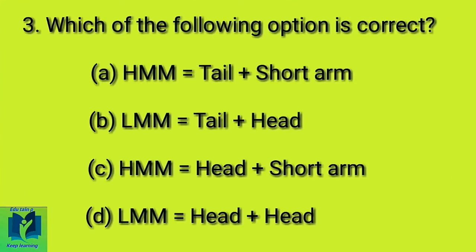Which of the following option is correct? Option A: Heavy Myosin is equal to Tail plus Short Arm. Option B: Light Myosin is equal to Tail plus Head. Option C: Heavy Myosin is equal to Head plus Short Arm. Option D: Light Myosin is equal to Head.